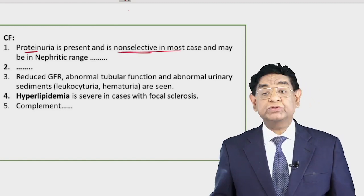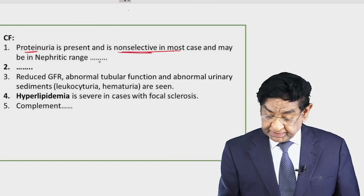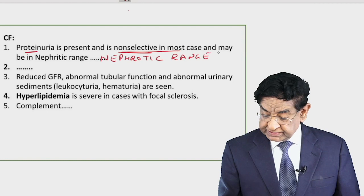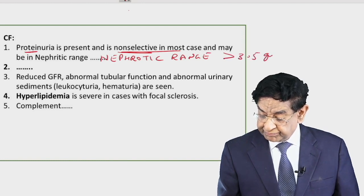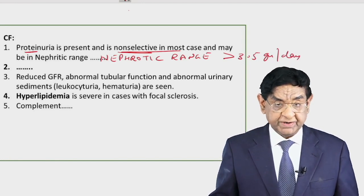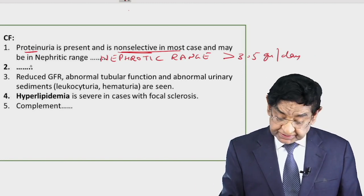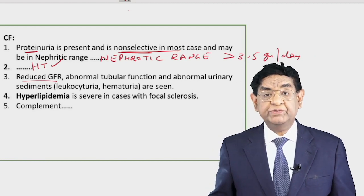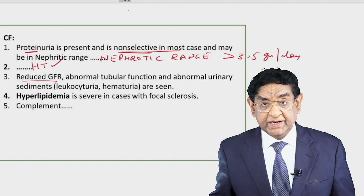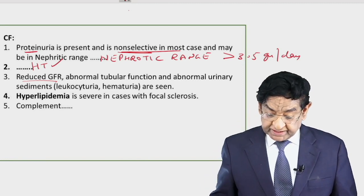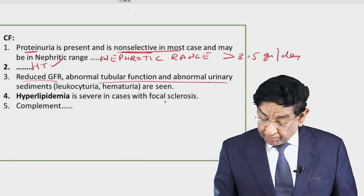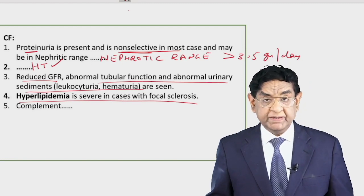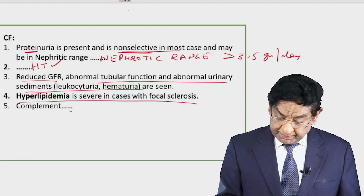Clinically, proteinuria is present and it is non-selective. It may be in the nephrotic range (more than 3.5 grams per day) or nephritic range. Hypertension is a feature. Reduced GFR occurs because many glomeruli are partially or fully non-functional. Abnormal tubular function, abnormal urine sediment, and hematuria can occur. Hyperlipidemia is a feature of any nephrotic syndrome, but complement level is normal in FSGS.